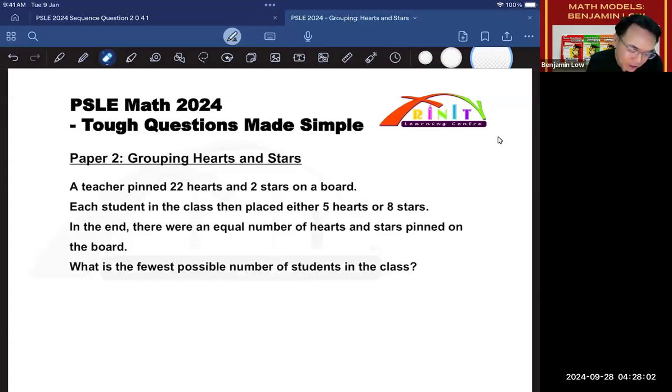First, we want to underline the keywords. So the keywords here are a teacher pinned 22 hearts and 2 stars on the board. Then after that, each student will come up and place either 5 hearts or 8 stars. So 5 hearts, no stars, or 8 stars, no hearts. They have to choose.